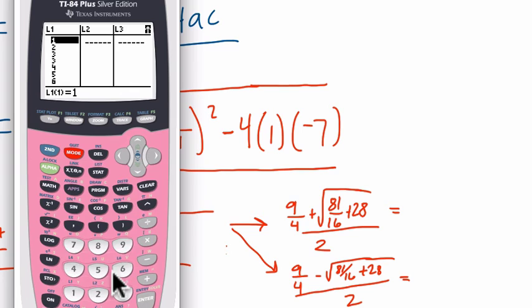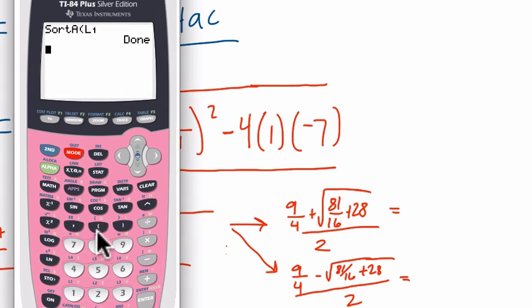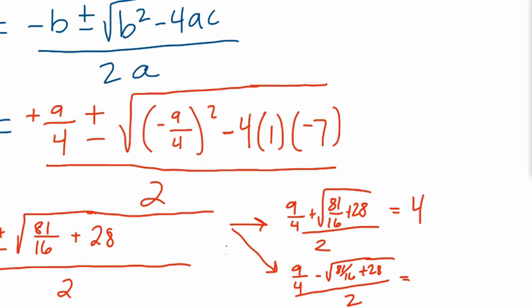Okay, so how do we add this in the calculator? I'll go to my home screen and clear everything off. Nine-fourths is just 9 divided by 4. We're adding the square root, second, here's the square root sign, of parentheses 81 divided by 16, right, plus 28. That's our numerator, enter. So that's where we add them, right, that's 8. All of that breaks down to just 8. And then we're dividing that by 2, so the first answer is just 4.